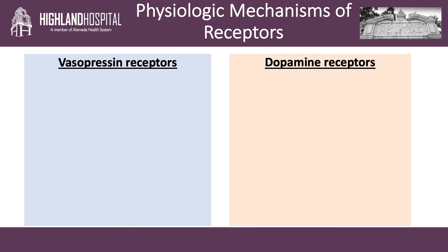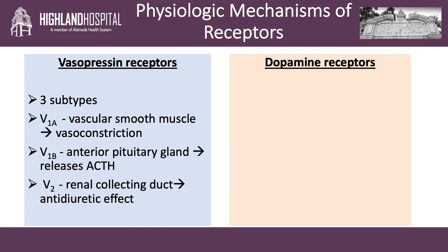The many actions of vasopressin are mediated by stimulation of two different signaling pathways, but for the purpose of our talk, we'll hone in on only a few of the different locations and their function. There are three main subtypes of vasopressin receptors: V1A, V1B, and V2. V1A receptors are located in the vascular smooth muscle; stimulation causes vasoconstriction. V1B receptors are located in the anterior pituitary gland; stimulation causes release of ACTH. And last, the V2 receptors are located in the renal collecting duct; stimulation will cause an antidiuretic effect.